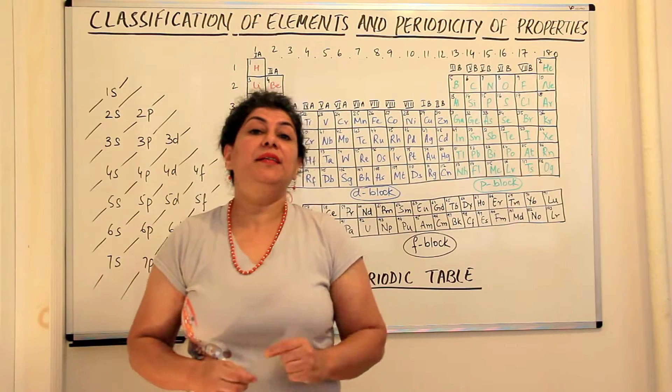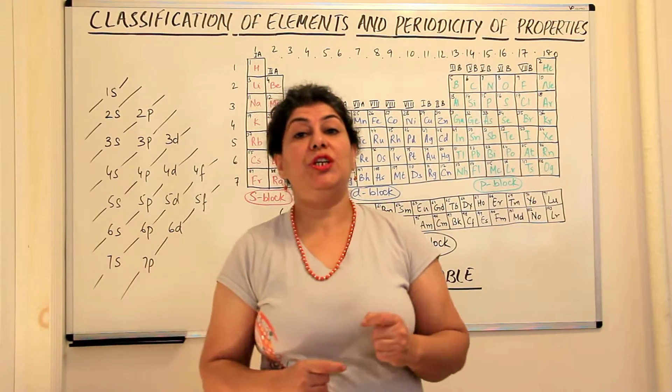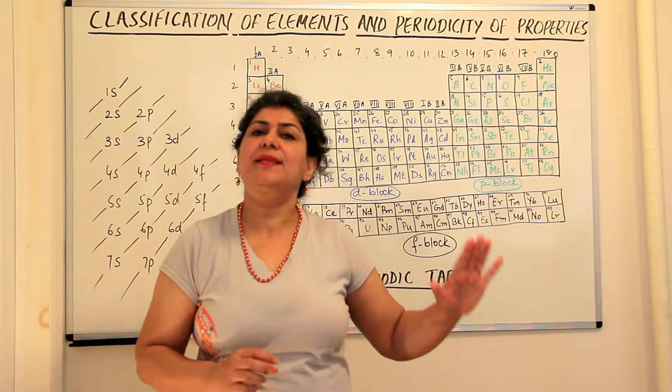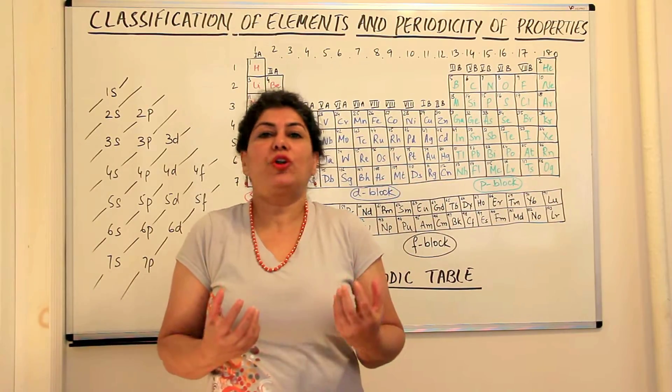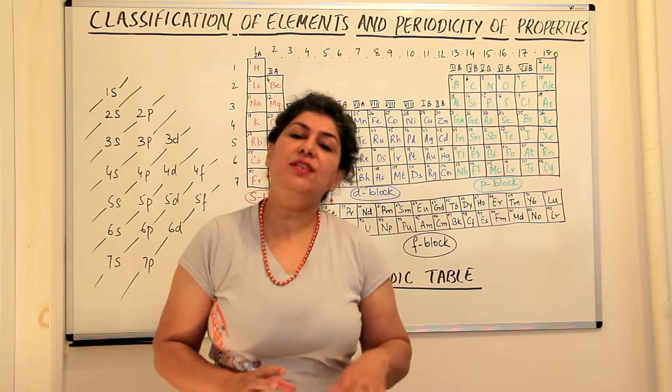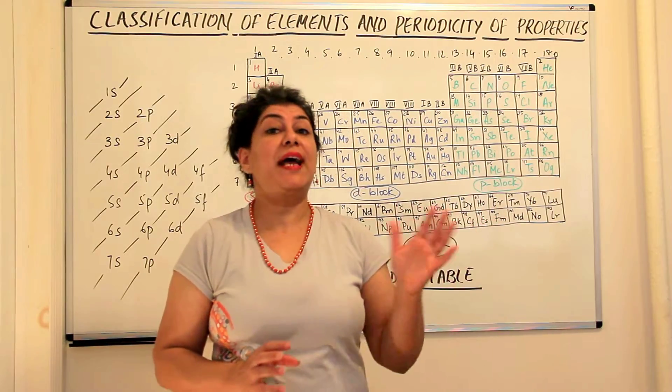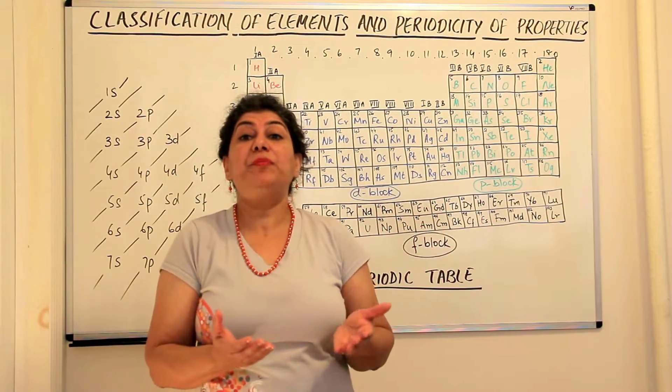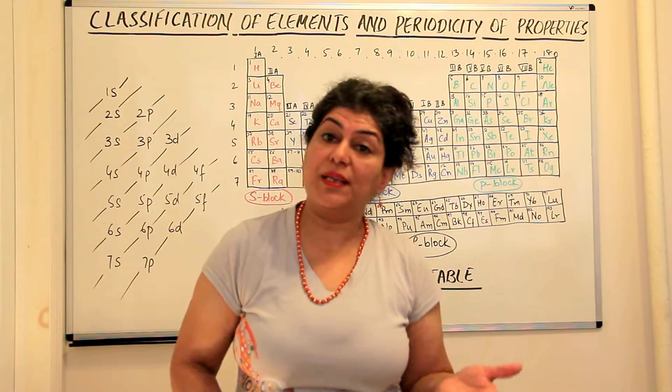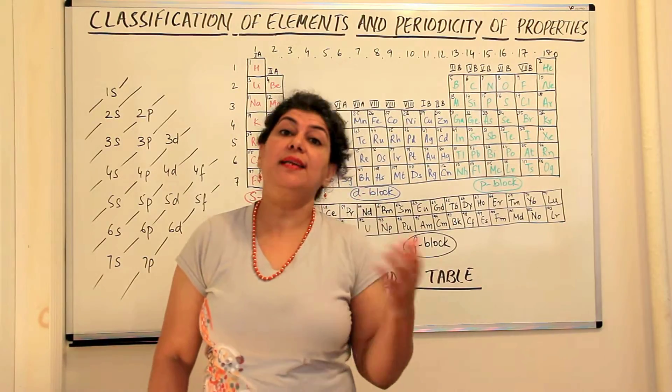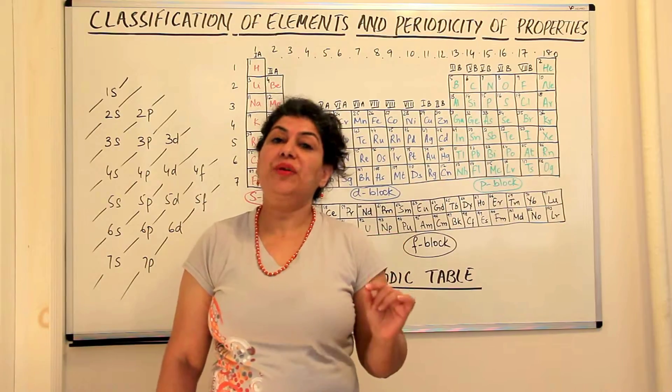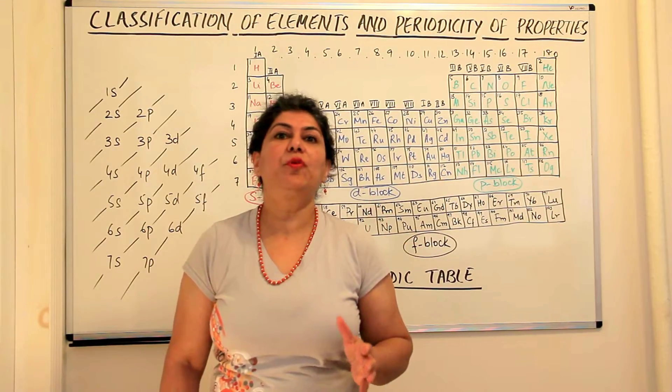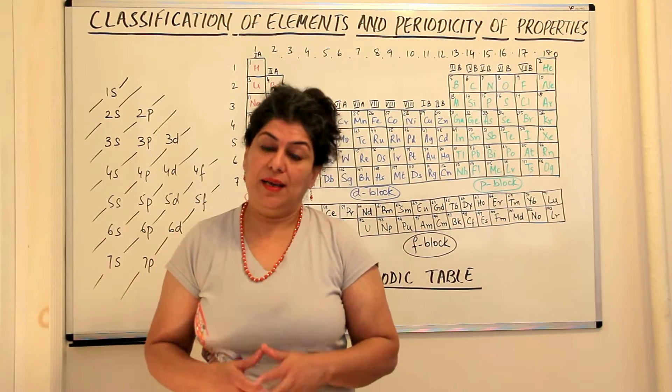The other thing that indicated his genius was that he left empty spaces in the periodic table and he believed that we perhaps do not know all the elements yet and new elements would be discovered. He went ahead and even predicted the properties of these elements which would be discovered at a later date and we actually found elements like germanium and gallium which had properties as predicted by Mendeleev.